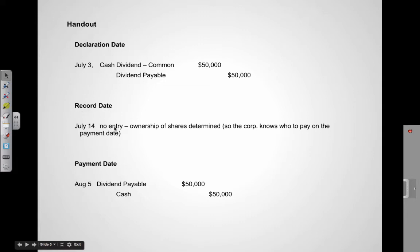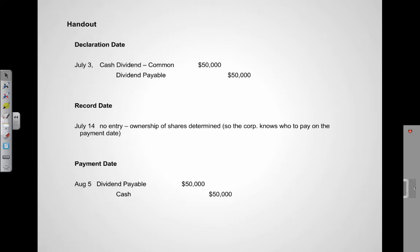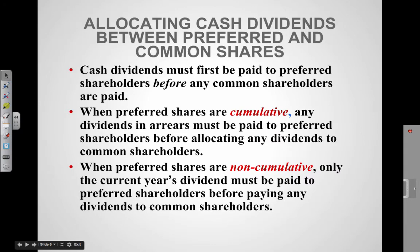Then approximately two weeks later on the record date, there is no journal entry. This is the date where the ownership of the shares is determined, so the corporation knows who to pay — they've got to mail the checks out to all those people. And then on August 5th, approximately two weeks later, the Dividend Payable is now paid. Cash is going out and you're reversing this liability.